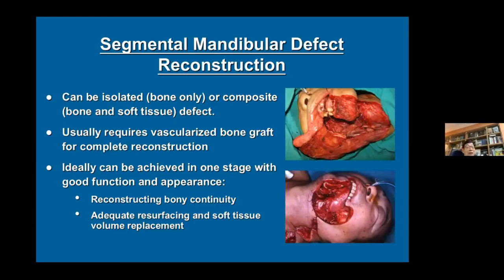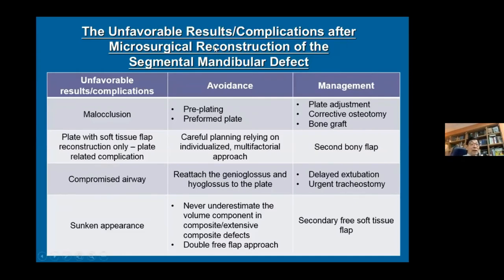For segmental mandibular defects, which are usually associated with soft tissue loss — either intraoral or external, the so-called compound or composite defect — reconstruction must address both bone and soft tissue coverage. Unfavorable results after fibular or bone reconstruction of segmental mandibular defects include malocclusion, plate-related complications, and issues with soft tissue flap. If the soft tissue is too bulky it may compromise appearance, but if inadequate it may result in a sunken appearance.